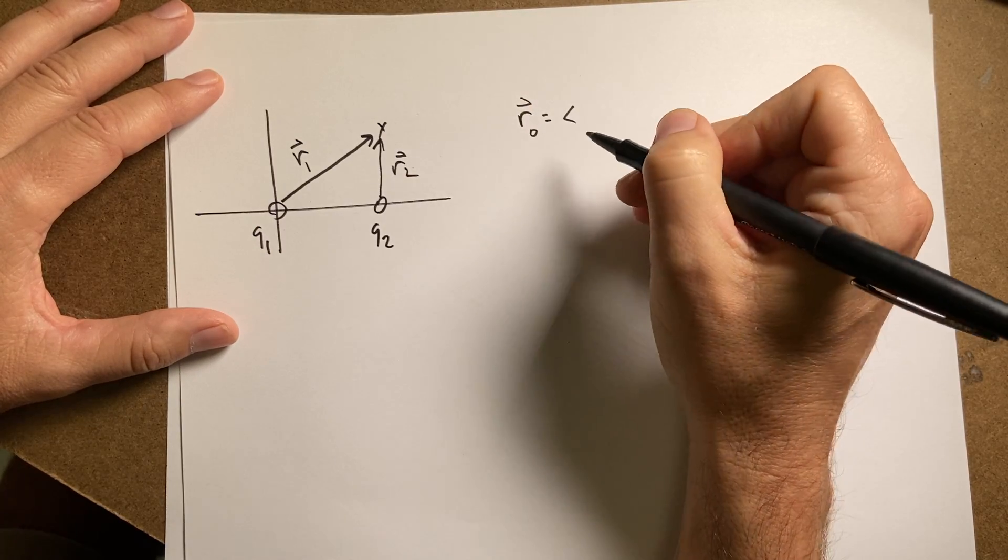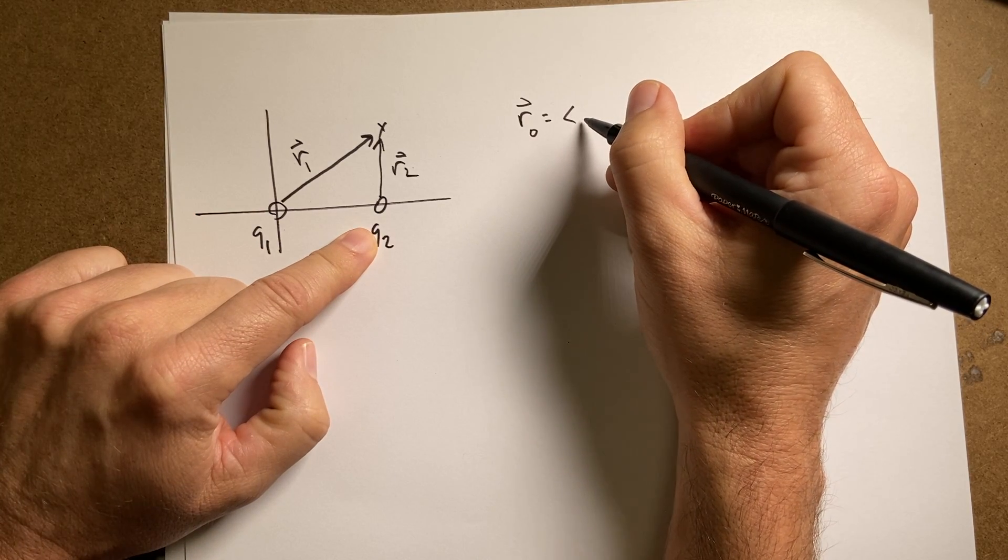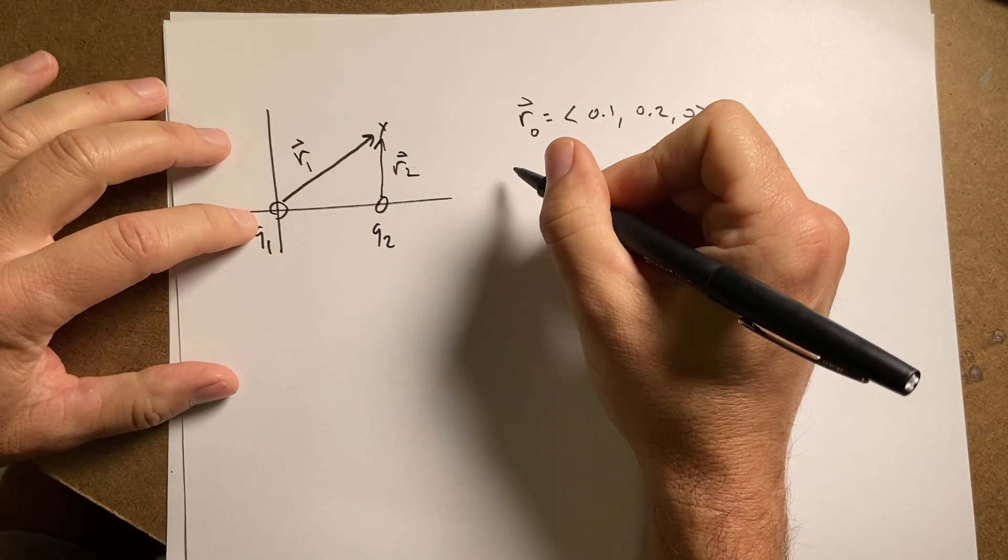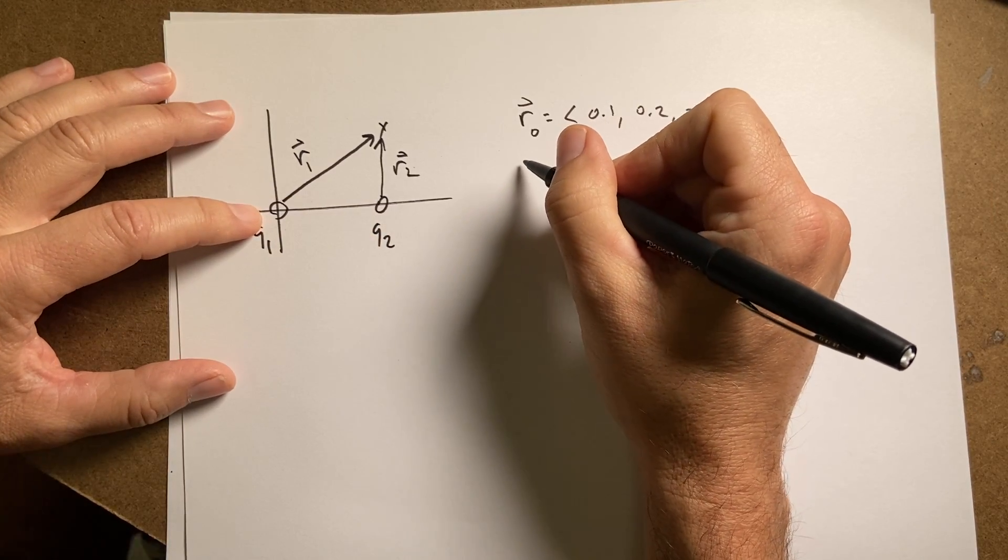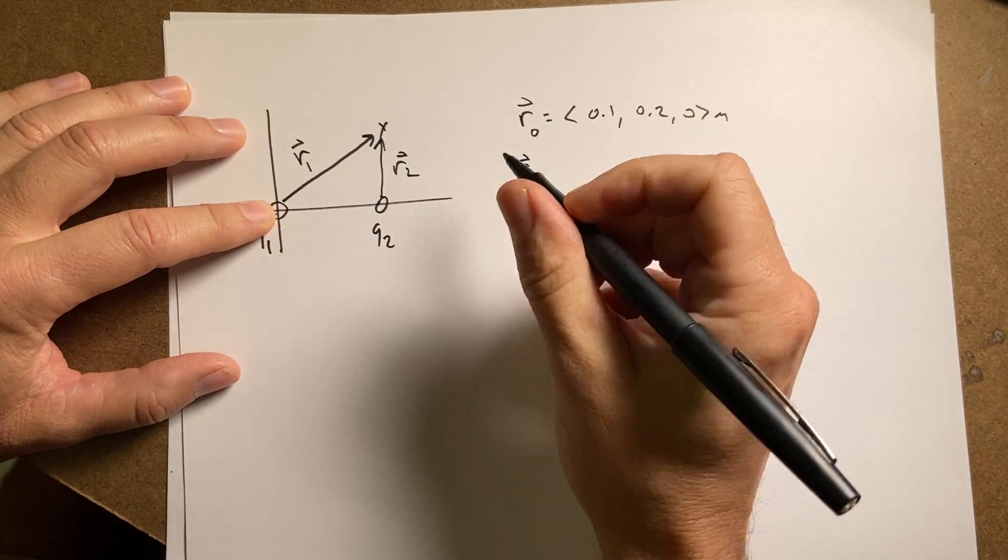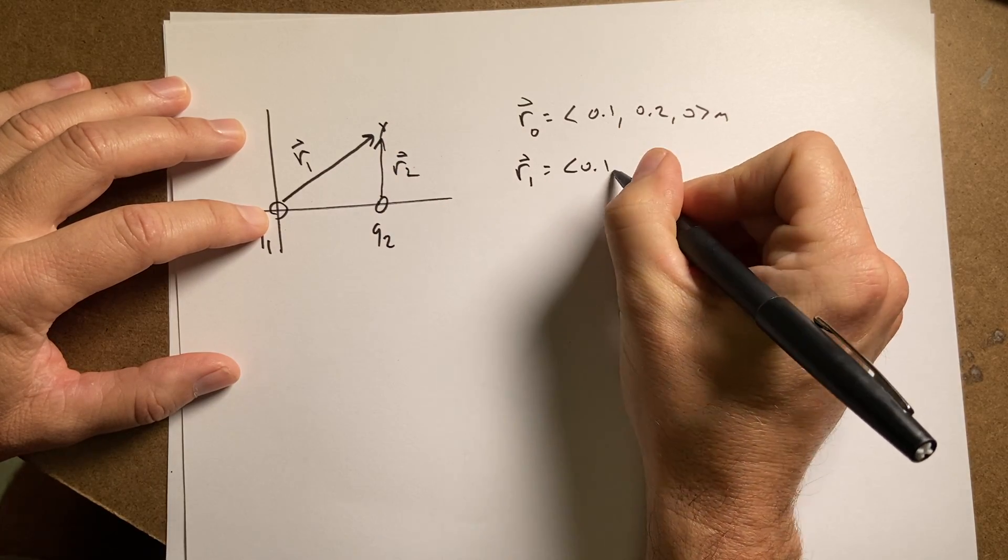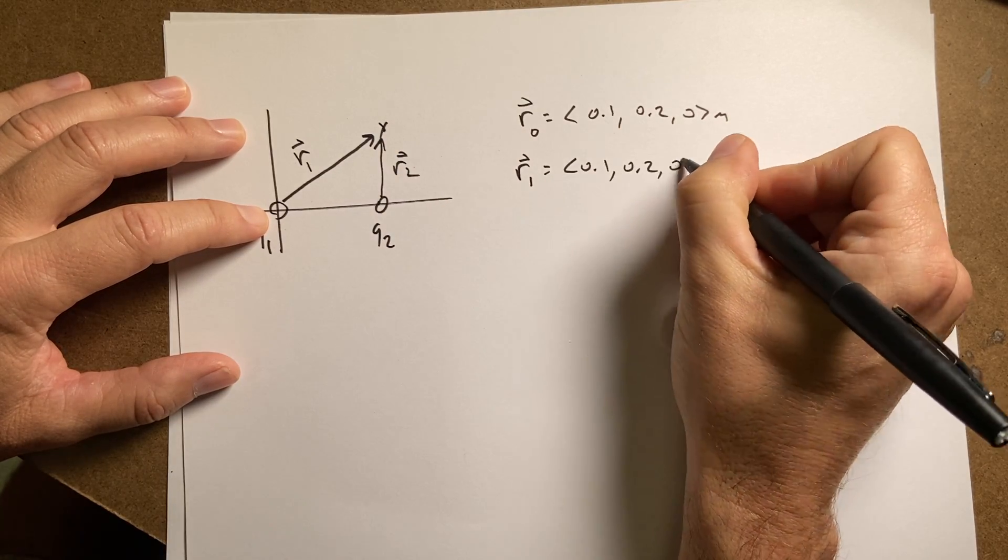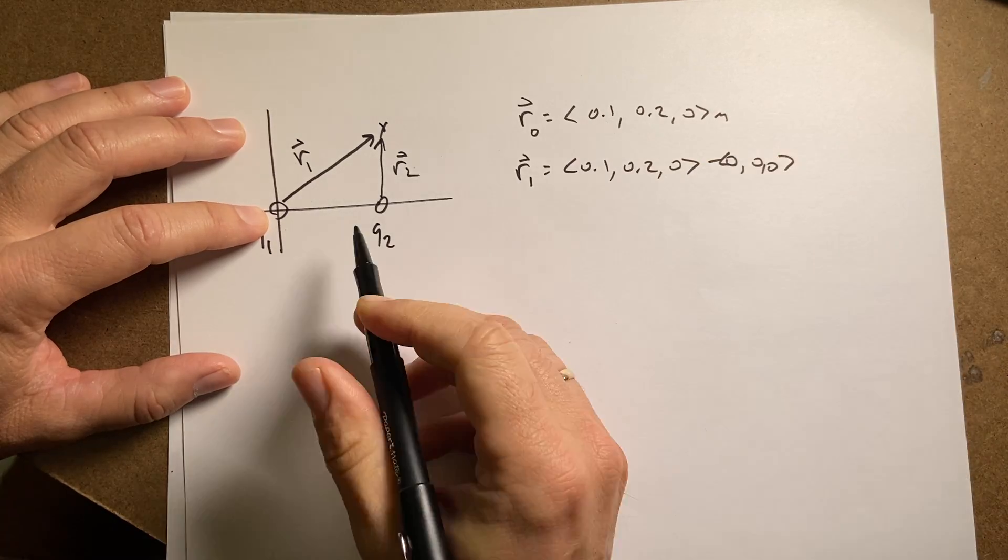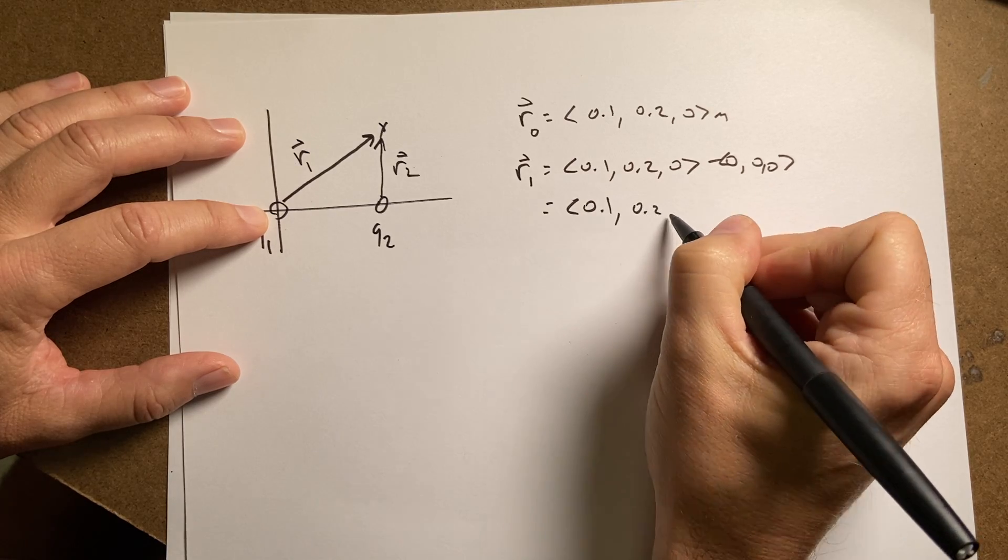So that's going to be equal to the vector, this was at 0.1, so 0.1, 0.2, 0 meters. And then I can say Q1 is at the location. Well, let's just say R1. It's going to be final minus initial. So it's going to be this position minus that. So it's just going to be 0.1, 0.2, 0, minus 0, 0, because that one's at the origin. So it's just going to be 0.1, 0.2, 0 meters.